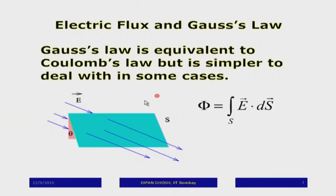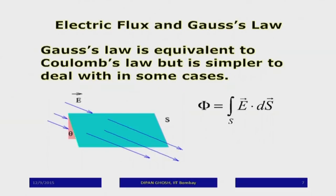The flux is the surface integral of the electric field, and the solid angle is the key concept to understand why a charge inside gives flux but one outside does not. For a solid angle: instead of an arc as in the planar angle, we take a surface dS. Drawing tangents from a point to all points on the surface makes a cone at that point. This is defined analogously to the planar angle: the perpendicular area divided by r², making it dimensionless.